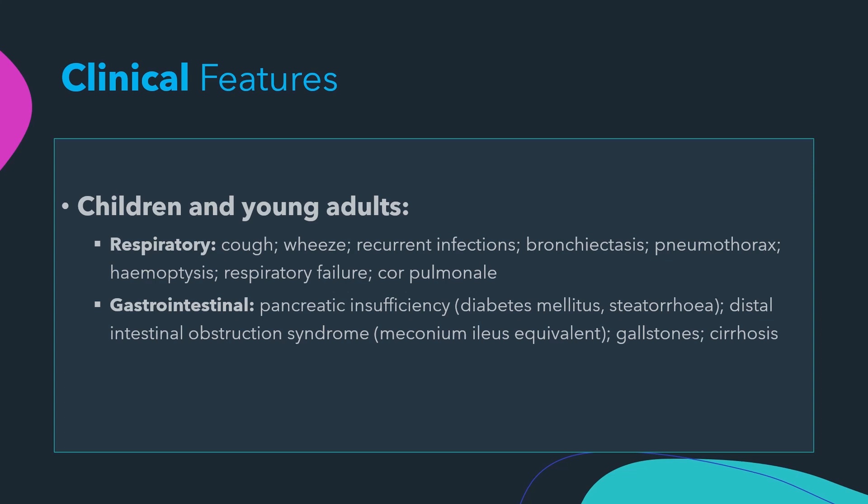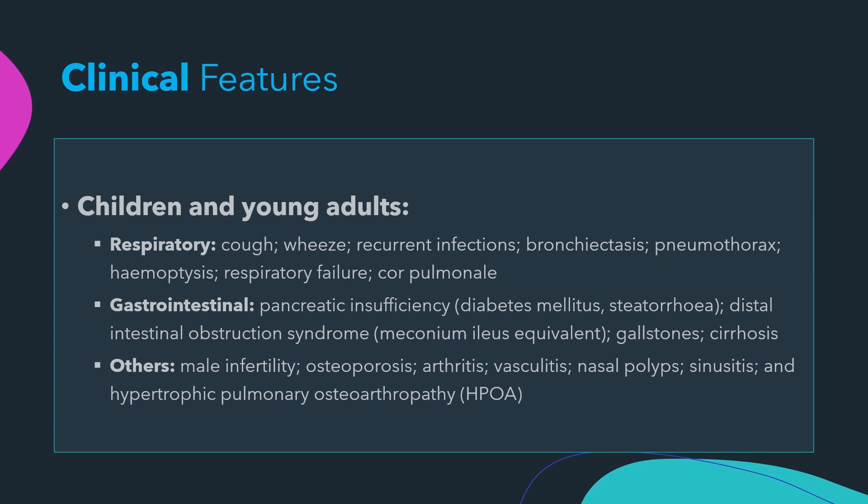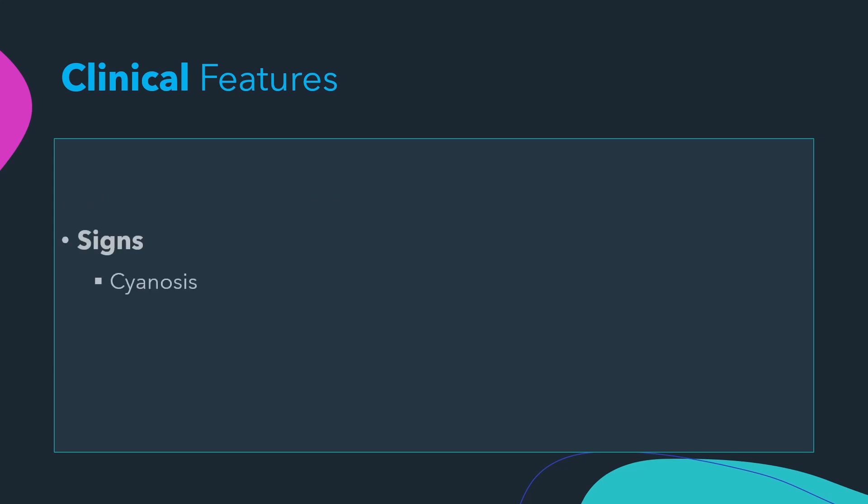Gastrointestinal symptoms include pancreatic insufficiency causing diabetes mellitus and steatorrhoea, and distal intestinal obstruction syndrome (also known as meconium ileus equivalent). There may also be gallstones and cirrhosis of the liver. Other features include male infertility due to absent development of vas deferens, osteoporosis, arthritis, vasculitis, nasal polyps, sinusitis, and hypertrophic pulmonary osteoarthropathy.